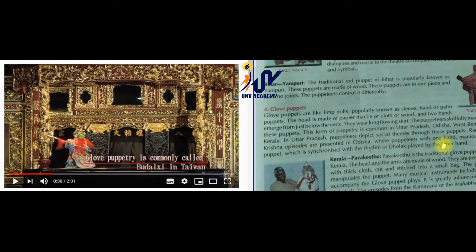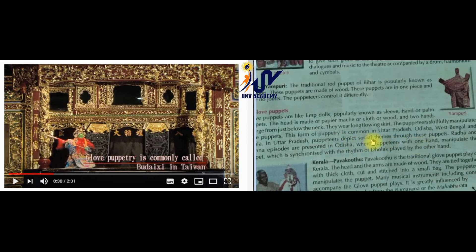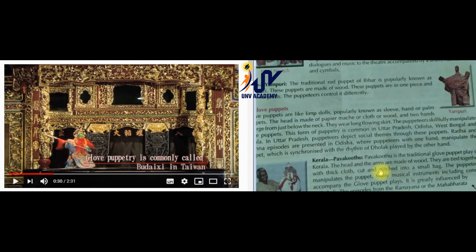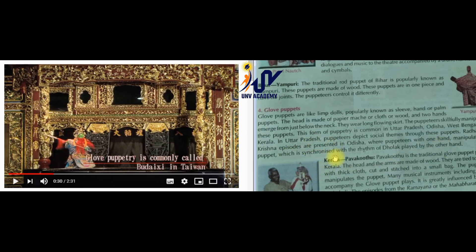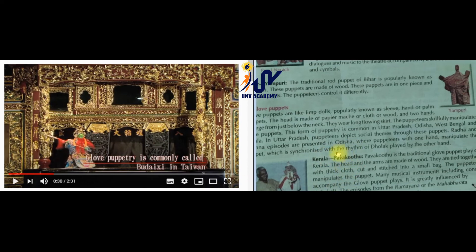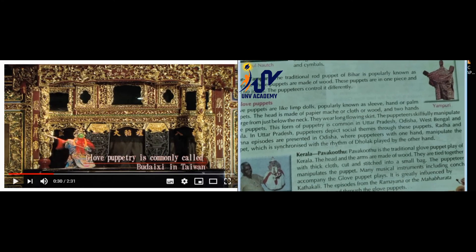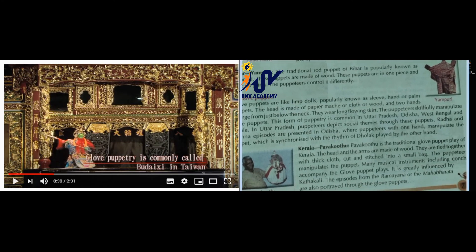In Uttar Pradesh, puppeteers depict social themes through these puppets - they are used to address social issues even for small children. In Odisha, Radha and Krishna episodes are presented through glove puppets. Puppeteers manage one hand from the puppet and synchronize with the other hand in a rhythmic way - they play the dholak with one hand while managing the puppet with the other.